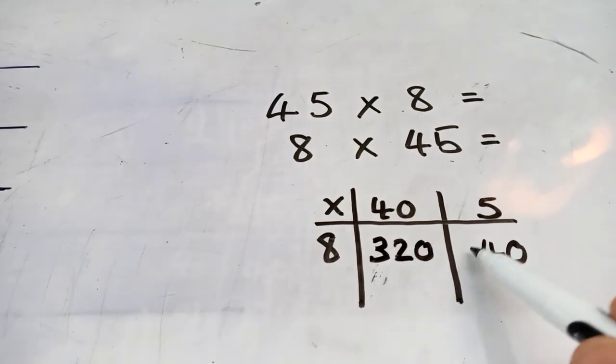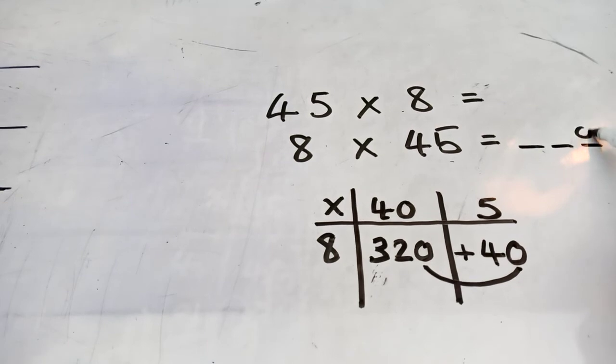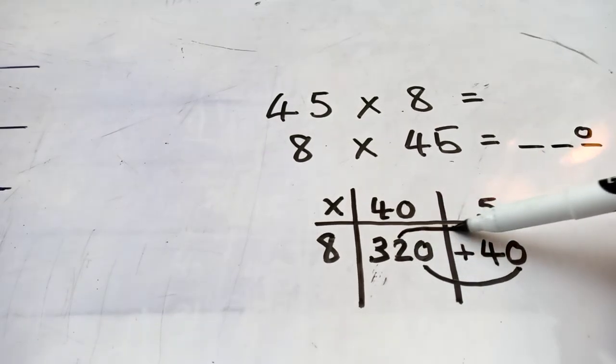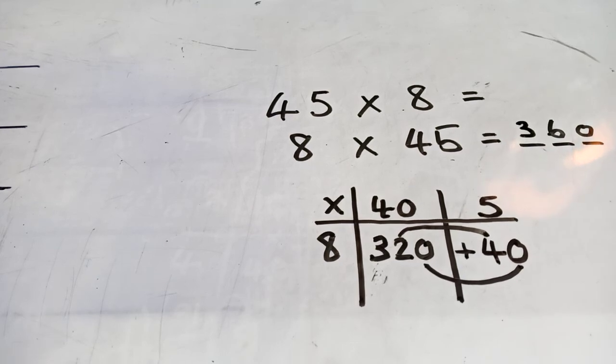What's 320 now? Add 40. Well, no 1s add no 1s is no 1s. 2 tens add 4 tens is 6 tens. And then, what have we got left? 300. 300 adds, oh, no 100s, so it's just 300. Okay? And that's the method there.